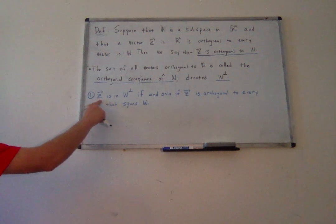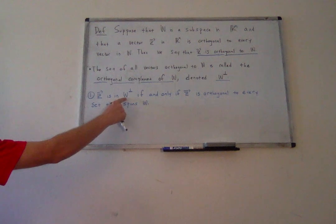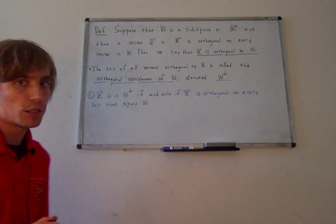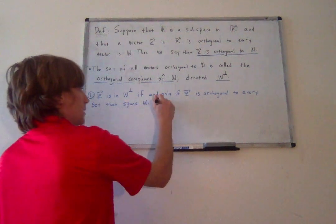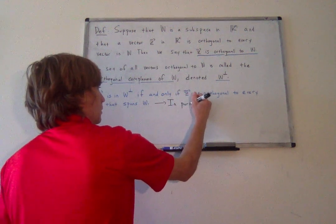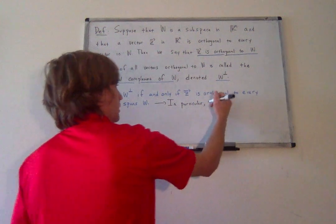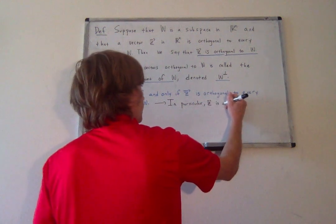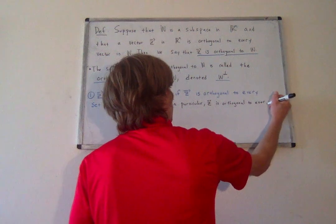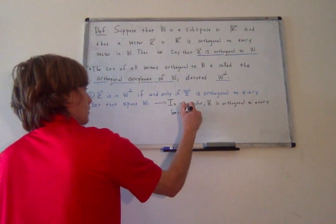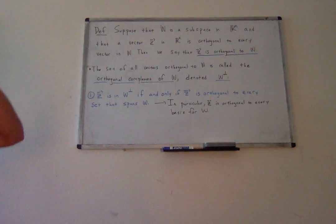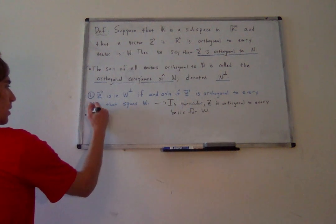The first thing I want to show is that a vector is in w perp if and only if that vector is orthogonal to every set that spans w. This is a little more general than we'll need moving forward, but in particular the key reason we want this statement is that z is orthogonal to every basis for w. So why is this statement in general true?